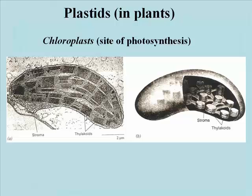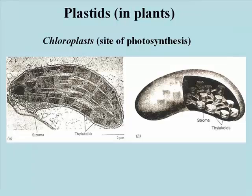Chloroplasts are also organelles surrounded by an inner and an outer membrane. In this case, the inner membrane invaginates — that is, grows inward — to form thylakoids, the stacked membrane seen in these illustrations.